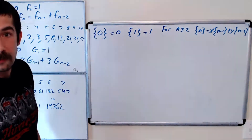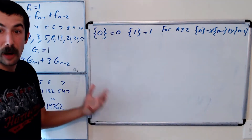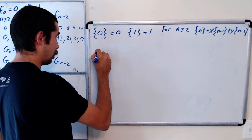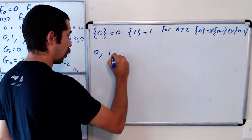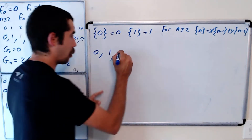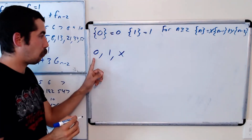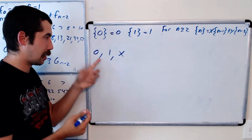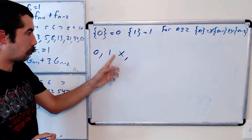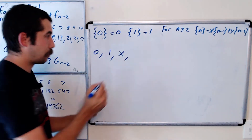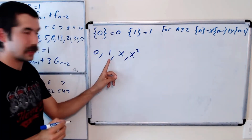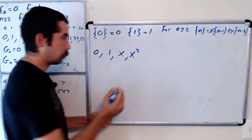Let me write out the first few of these polynomials. {0} = 0, {1} = 1. For {2}: it's x times the previous plus y times 2 ago, so x times 1 plus y times 0, which gives x. For {3}: x times x plus y times 1, which gives x squared plus y.